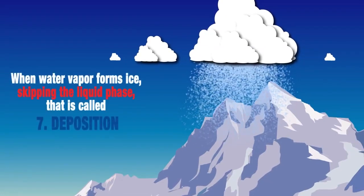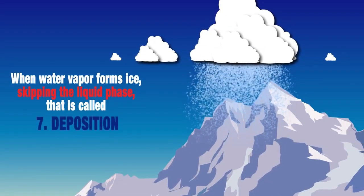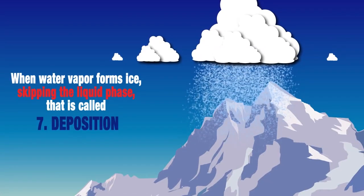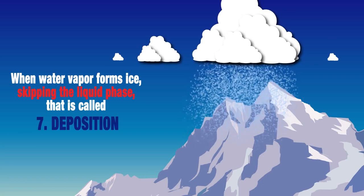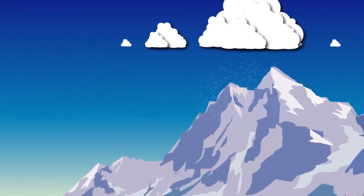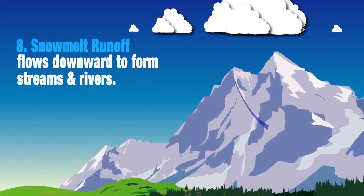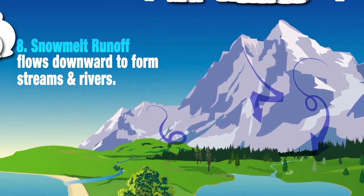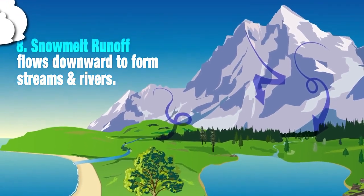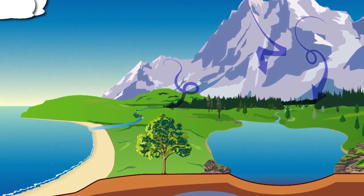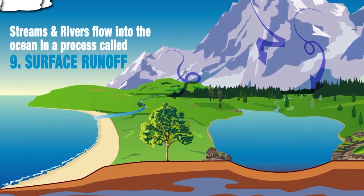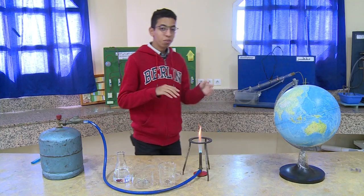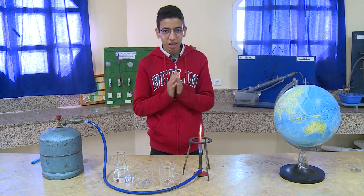Deposition: when water vapor changes state directly from a gas to a solid by forming ice. Snowmelt: when water flows downward to form streams and rivers. Surface runoff: when streams and rivers flow into the ocean.